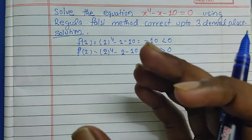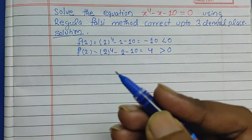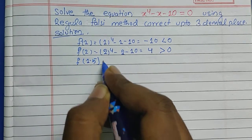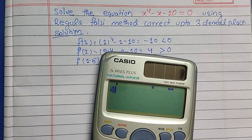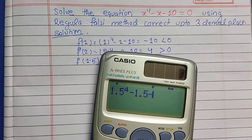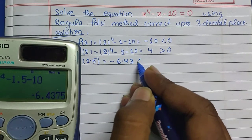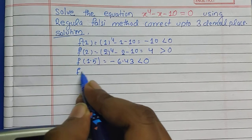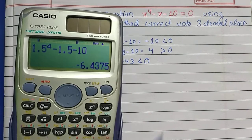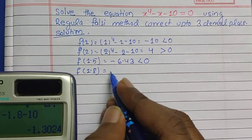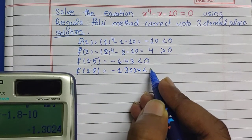To decrease the number of steps needed, we can take two or three more points between 1 and 2. Taking f(1.5): 1.5 to the power 4 minus 1.5 minus 10 gives minus 6.43, which is less than zero. Taking f(1.8): 1.8 to the power 4 minus 1.8 minus 10 gives minus 1.3024, which is also less than zero.